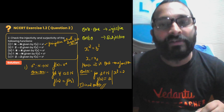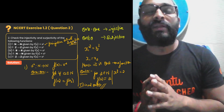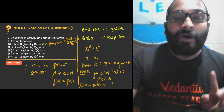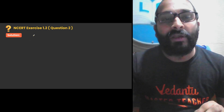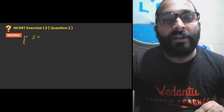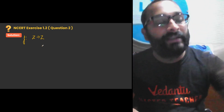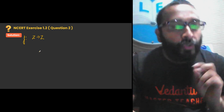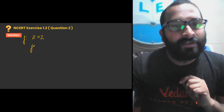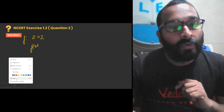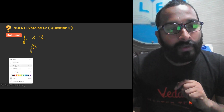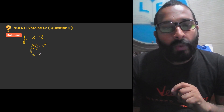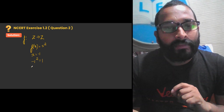I hope the first sub-question is clear. If you are able to understand these questions, like, share and subscribe, and share with your friends so they can also solve these easily. Now for the second sub-question, the function is from the set of integers Z to integers Z, with f(x) = x². Under the set of integers, you get all negative and positive numbers. If you take x = −1, then (−1)² = 1, and 1² = 1.